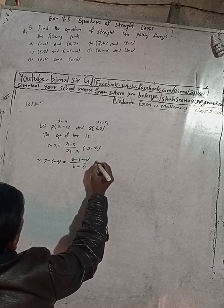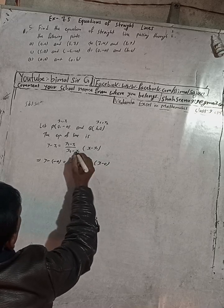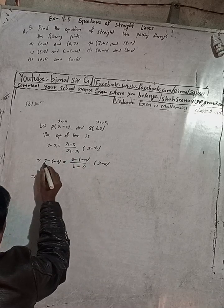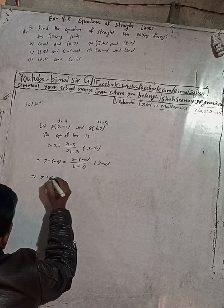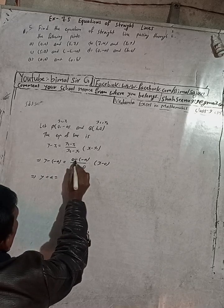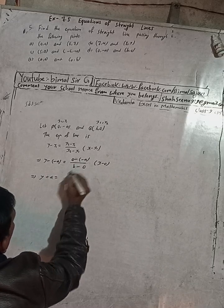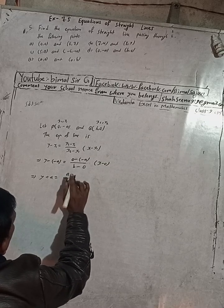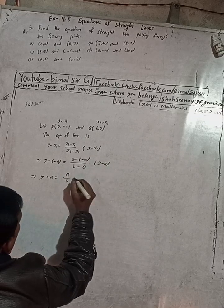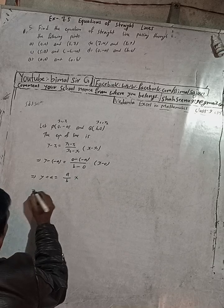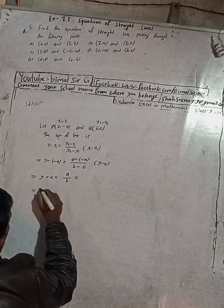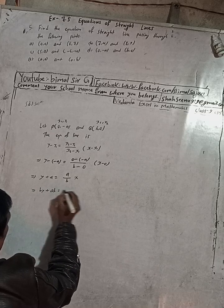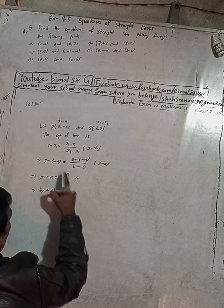Substituting x1 = 0, y1 = -a, x2 = b, y2 = 0: x minus x1 is x minus 0, which is just x. So y minus (-a) equals (0 minus (-a)) over (b minus 0), times x. That gives y plus a equals a over b times x. Multiplying both sides by b: by plus ab equals ax.